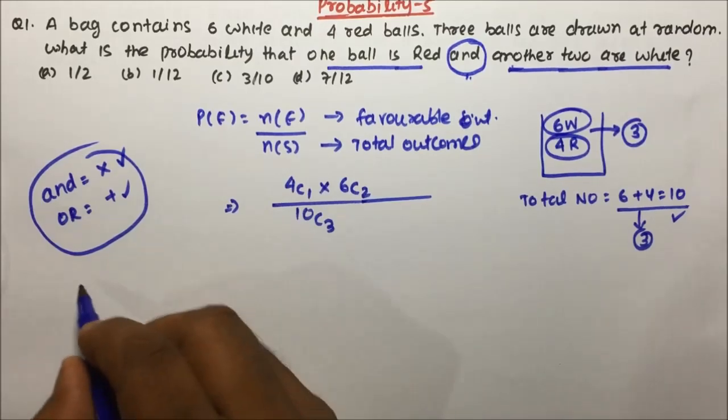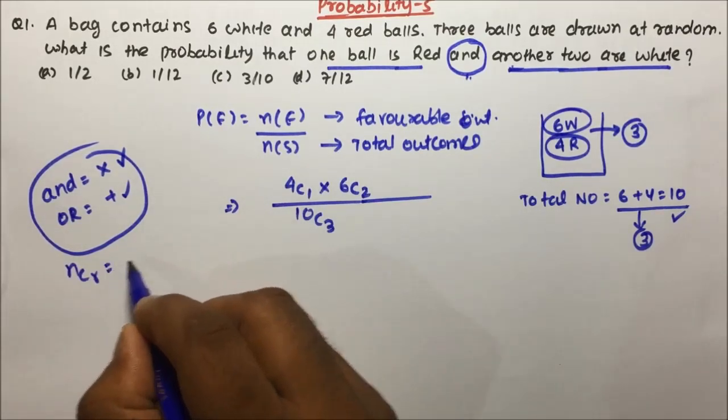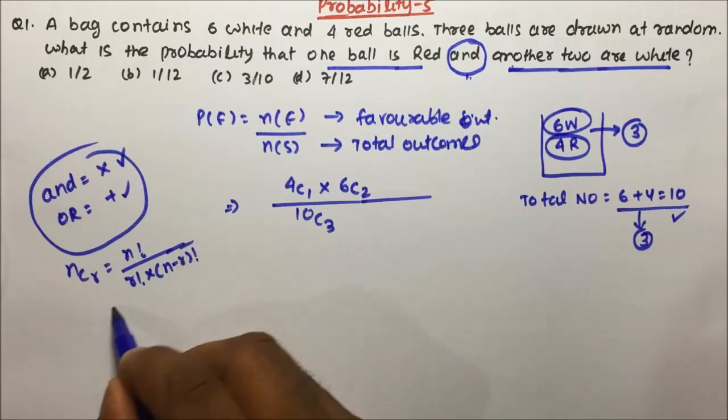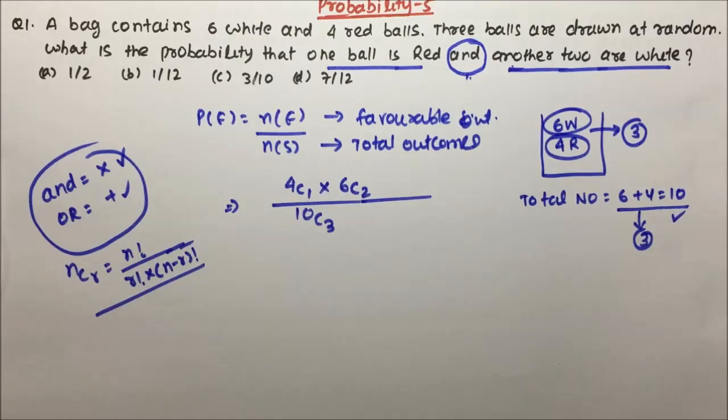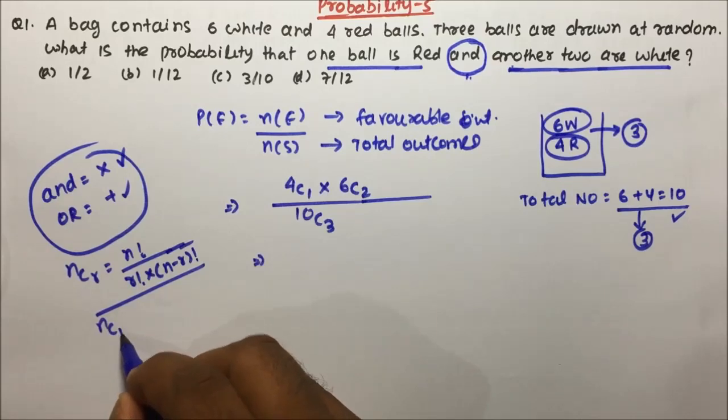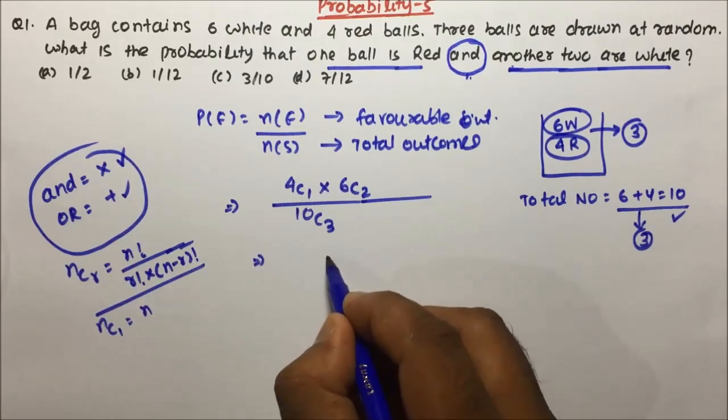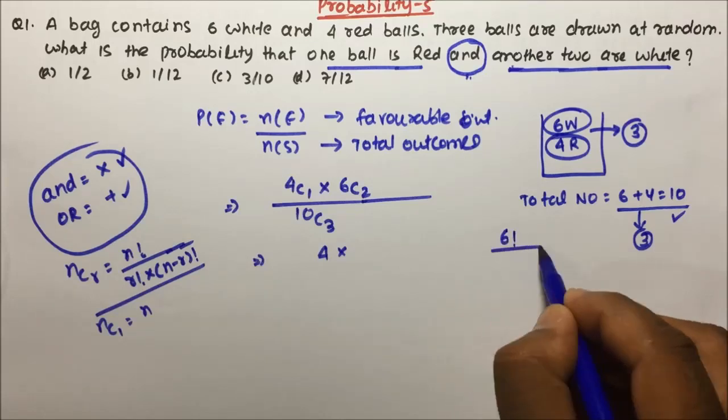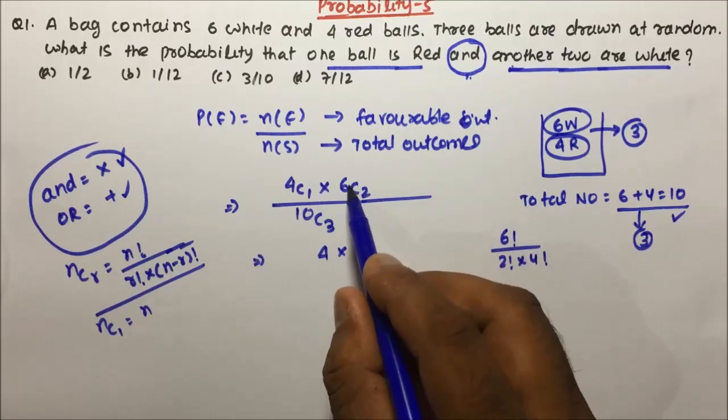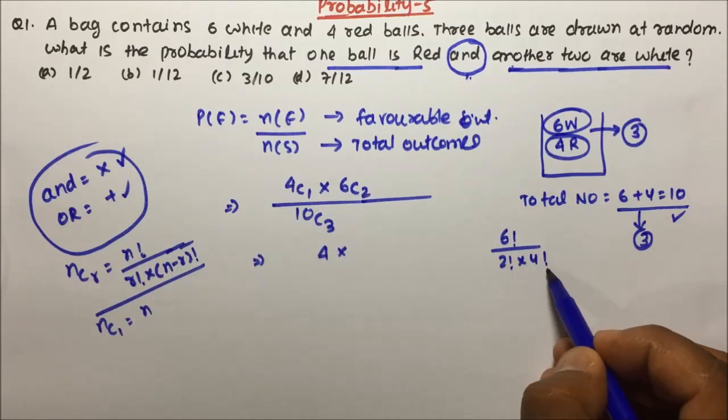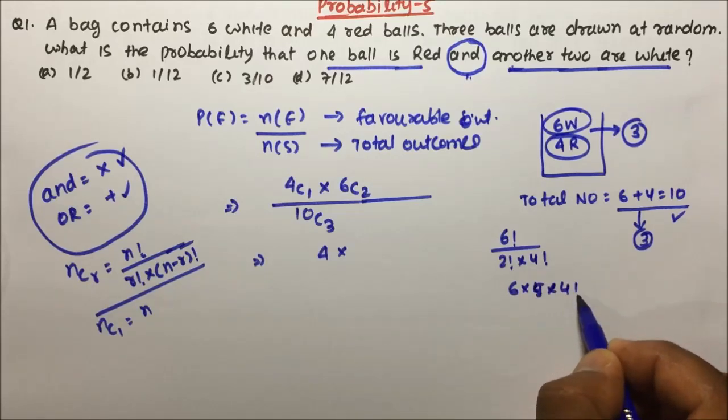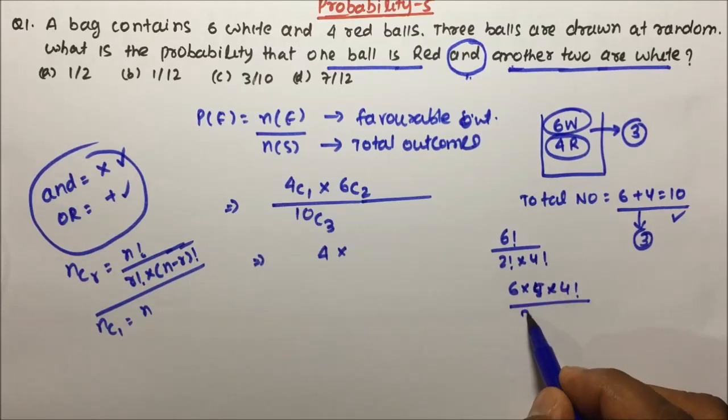Now calculate the value using the formula nCr, where nCr will be equal to n factorial divided by r factorial into n minus r factorial. So 4C1 will be equal to 4. 6C2, so 6 factorial divided by 2 factorial into 4 factorial. 6 factorial expanded till the highest value in the denominator, 2 factorial is 2, 4 factorial cancels. 2 times 3 is 6, that means this will be 15.